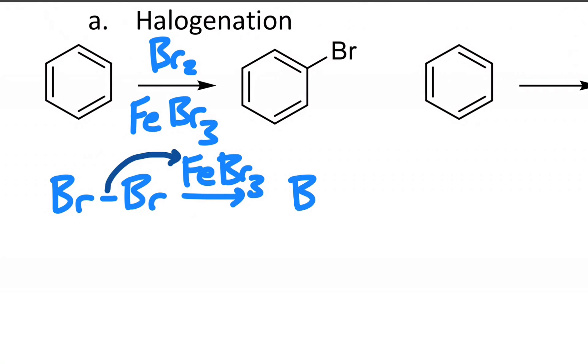So you essentially get a bromide cation left behind, and then a complex ion with iron and four bromines as a byproduct.